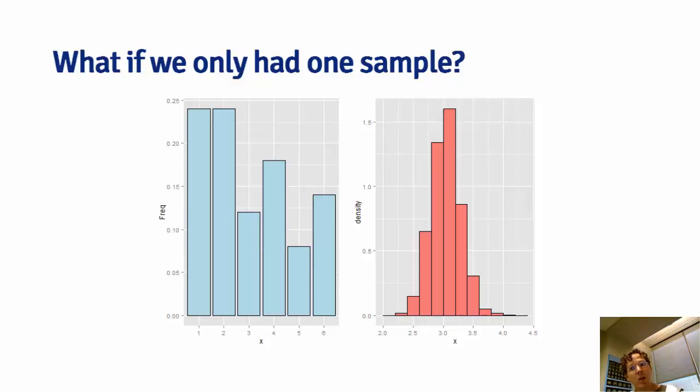So what bootstrapping says is, well, why don't we do the next best thing? Why don't we sample from our empirical distribution, repeatedly sample collections of 50 die rolls, not from the true distribution, but from whatever our sample of size 50 estimates.